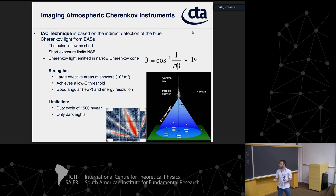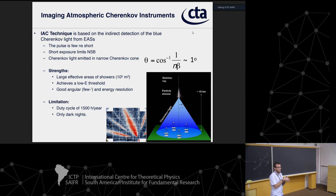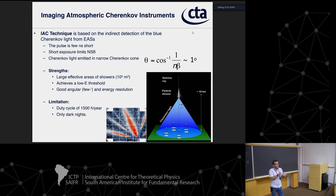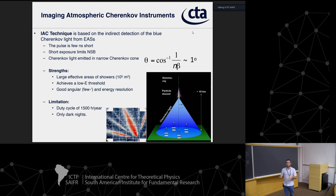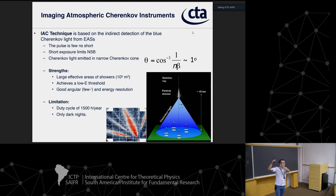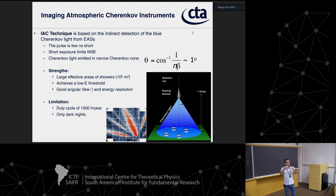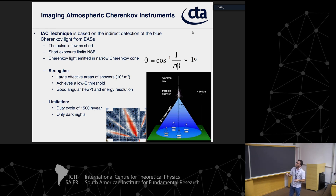Cherenkov light is emitted at a very narrow angle proportional to the atmospheric density at the emission height — about 0.7–0.8 degrees at the top of the atmosphere, increasing to about 1–1.2 degrees lower down. This generates the focusing effect discussed in previous lectures. All these emissions happen in a cone, and the combined emissions form a light pool that is circular for a shower coming from zenith, or an ellipse for a shower coming from the side.